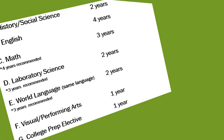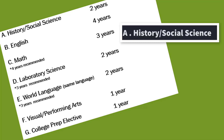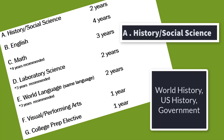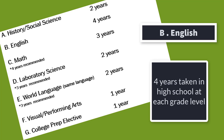Here's the list of the A through G requirements. Subject requirement A is history and social science. Examples of classes that meet this requirement are world history, U.S. history, and government. Subject requirement B is English. You will need four years to meet this requirement, which includes the four years of English required while in high school.